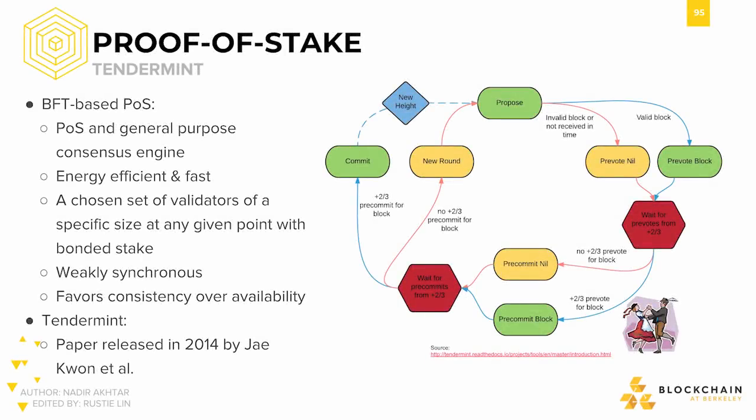Tendermint was the first BFT-based proof-of-stake consensus mechanism, created by Jay Kwon and his team in 2014. To give a bit of historical context, Tendermint brought with it the academic rigor of more traditional consensus mechanisms such as PBFT, Paxos, and Raft to a space that was at the time mostly dominated by newer blockchain consensus mechanisms, namely proof-of-work and other Nakamoto consensus mechanisms.